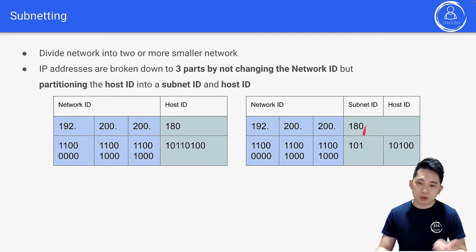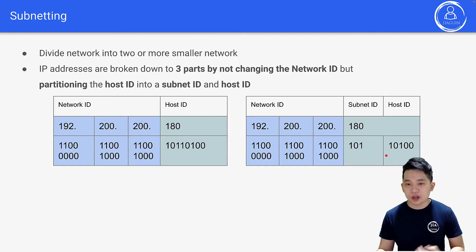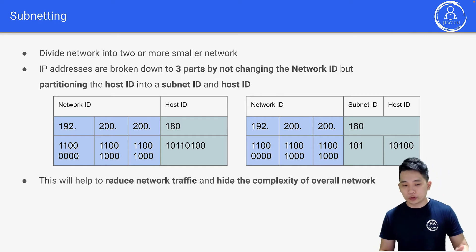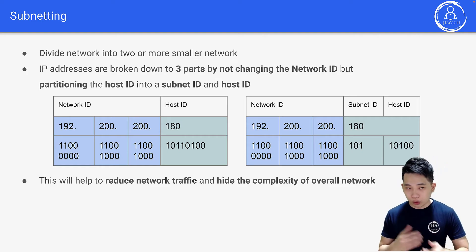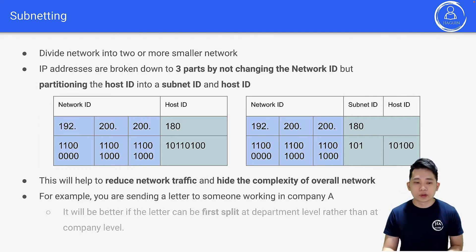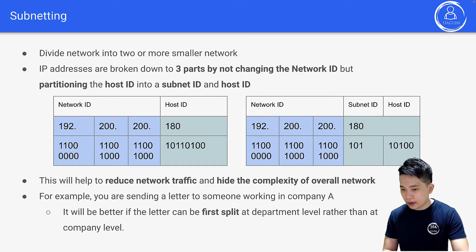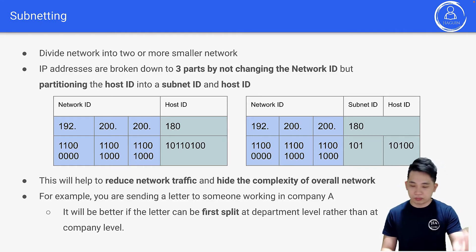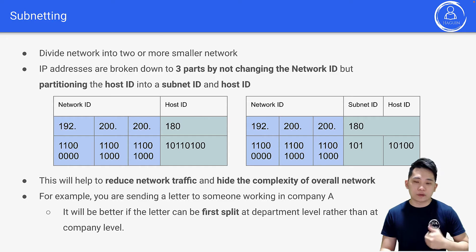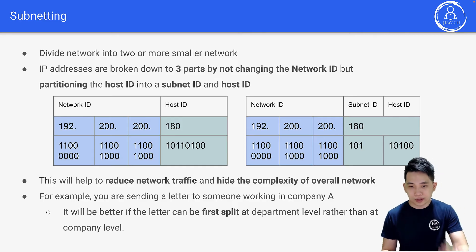When you look at it in binary representation, the split is more obvious — the first three bits are for subnet ID and the last five bits are for host ID. This helps reduce network traffic and hide the complexity of the overall network. Think of it like sending a letter to someone in a company: it's much easier to direct it to a specific department first, and then the department can deliver it to the individual, rather than sending it to the whole company.